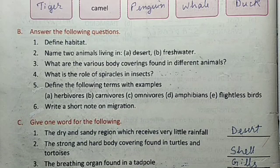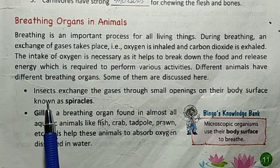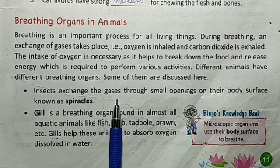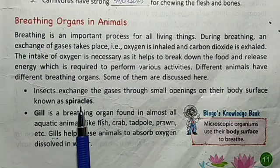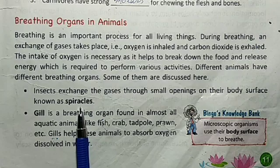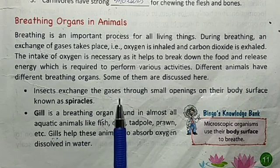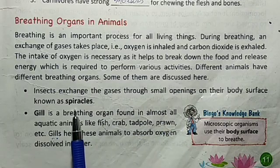Question number 4: what is the role of spiracles in insects? Insects exchange gases through small openings on their body surface known as spiracles. These spiracles are the breathing organs of insects.